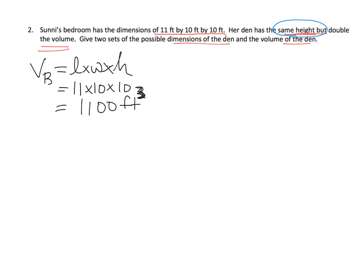But it's supposed to have double the volume. So now we're supposed to give two sets. So what is that saying? Well, the volume of the den, length times width times height. But we're told that the volume of the den is twice as big as this. So the volume of the den is 2,200.